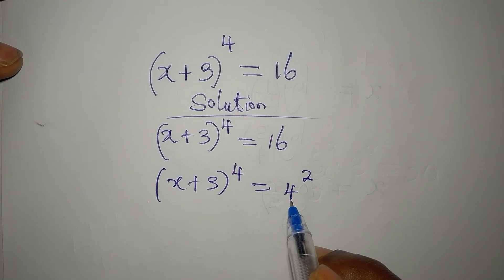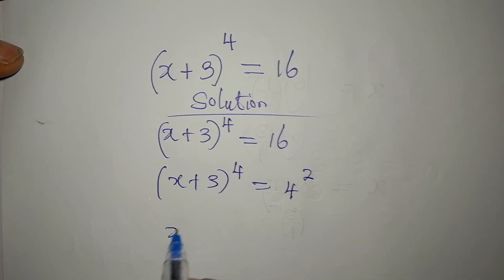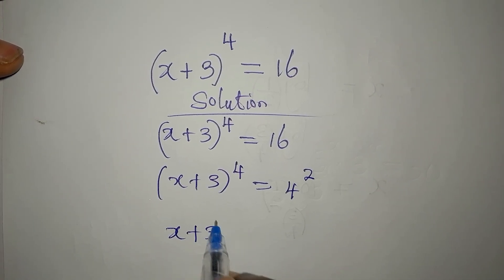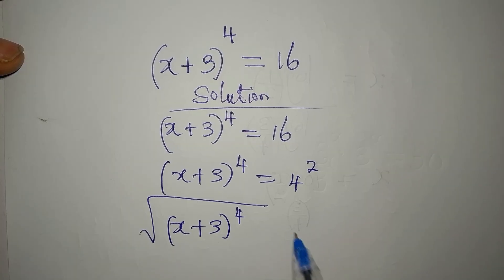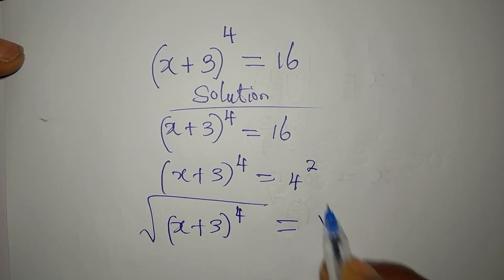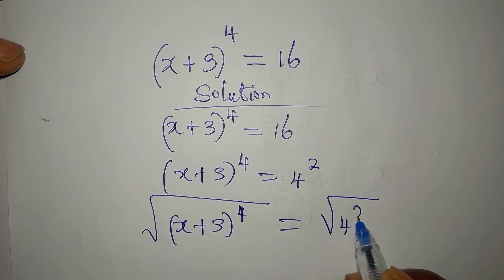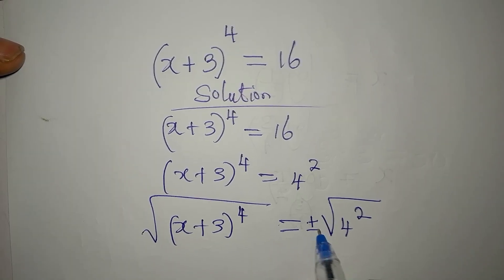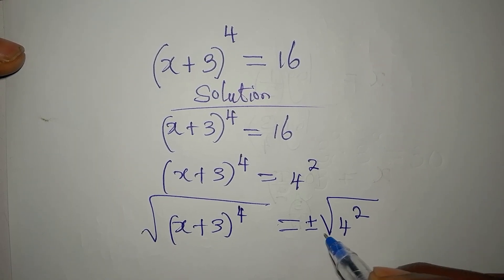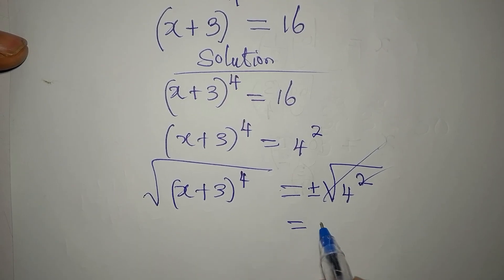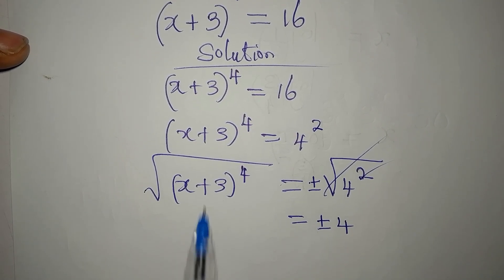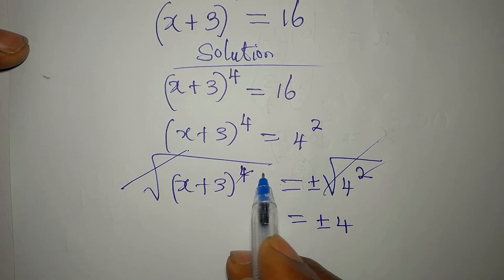So if I take the square root of the left, I will equally take the square root of the right. Taking the square root of (x + 3) to the power of 4, I will also take the square root of 4 squared — and that gives us plus or minus 4 on the right.